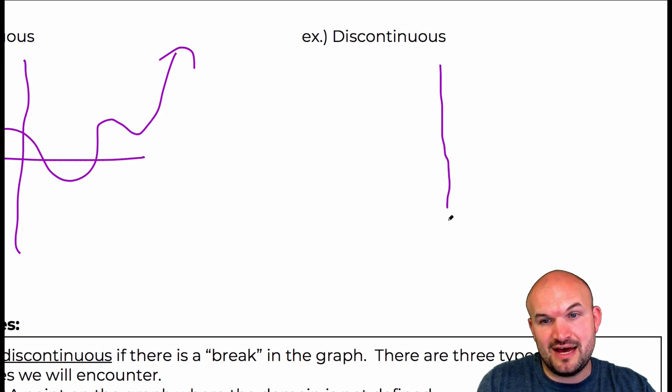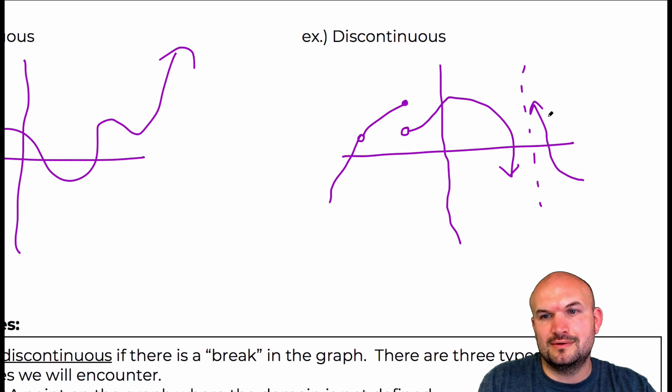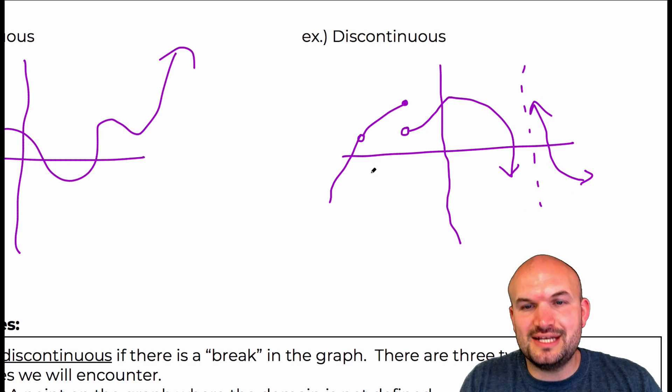A discontinuous graph can have any type of discontinuity. So we could have a hole like that, and then we could jump. So you can see here, this graph...